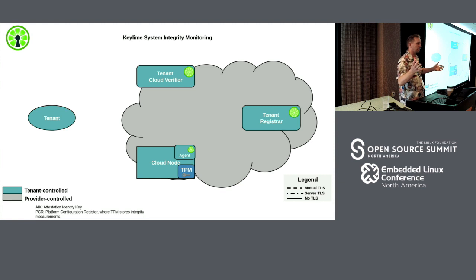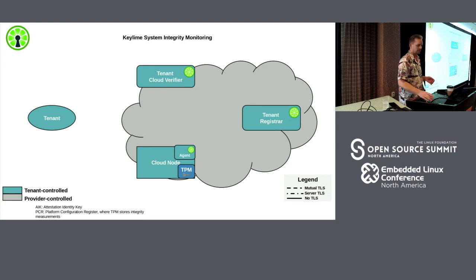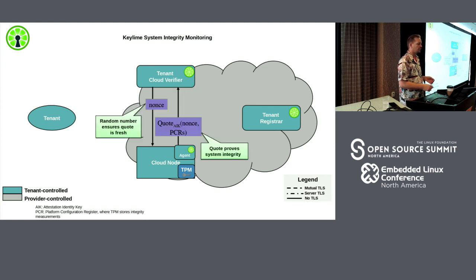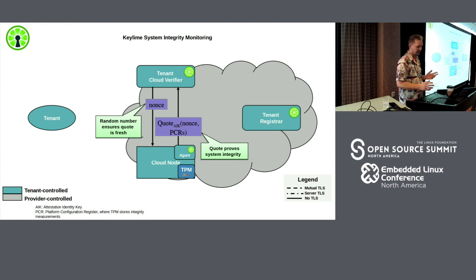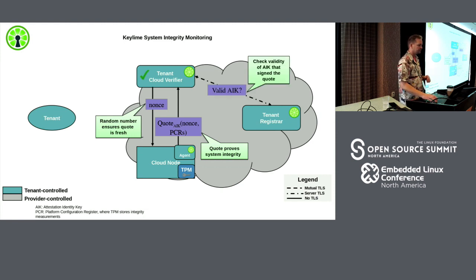Now we have a system that's running and was initially trusted, but we want to ensure it continues to be trusted. The verifier constantly asks for TPM measurements of the running system — creating nonces, verifying fresh quotes, passing them back, checking that everything checks out, and verifying the AIKs again.